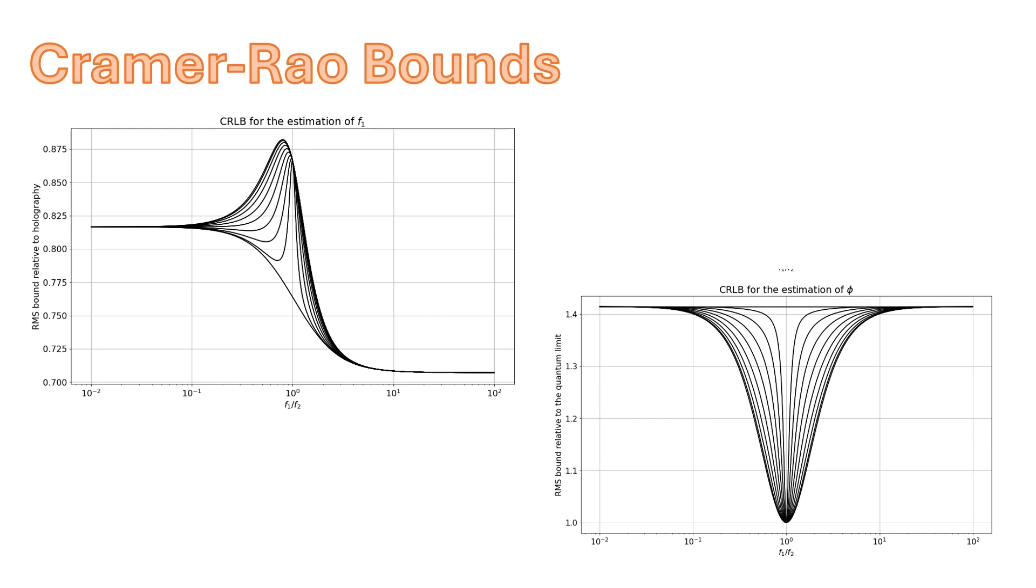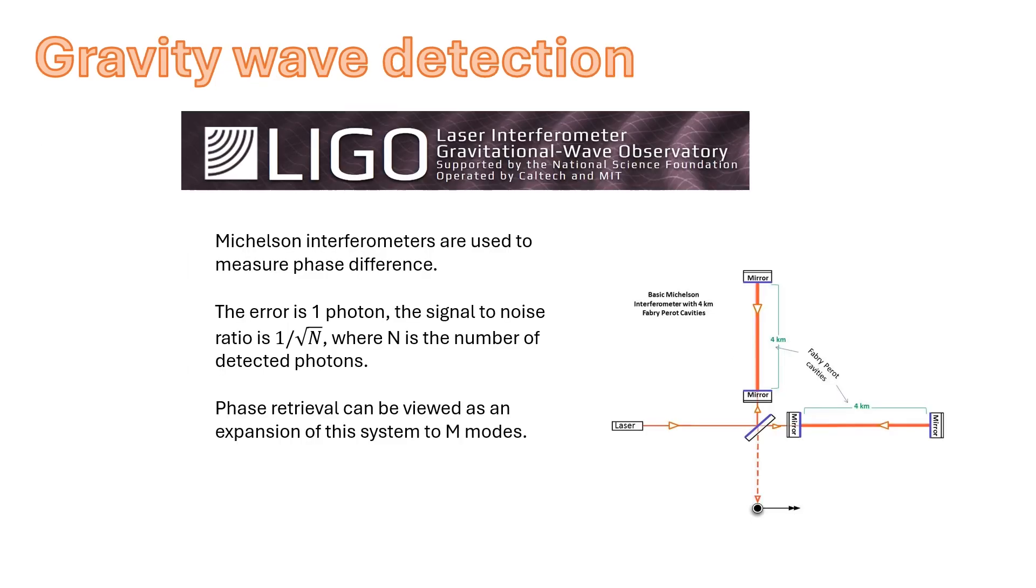This analysis of phase retrieval on two modes is central to applications such as gravity wave detection, where you try to evaluate the path difference between two arms and detect gravity wave modulations of that path difference. In the case of gravity wave detection, the error is going to be one photon for standard techniques. So the signal to noise ratio would be one over the square root of the number of photons that you measure. In gravity wave detection, extraordinary efforts are made to improve this resolution by using prepared quantum states. If you go to a prepared quantum state, you can do better than the coherent state error that you get when the system is not squeezed.